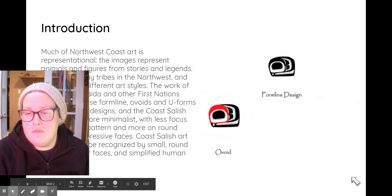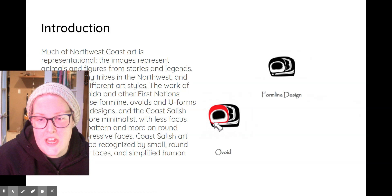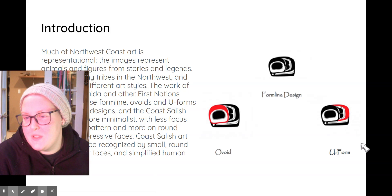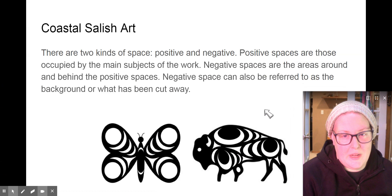Here's form line design, which is something we are more used to seeing around here with Northwest art. This is an ovoid shape — it's kind of like an oval. And these are the u-forms, which are kind of like scoops.